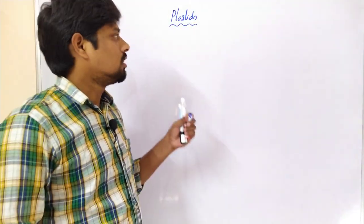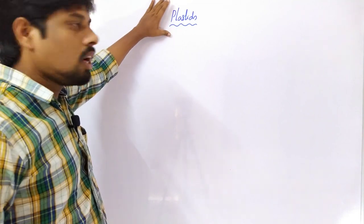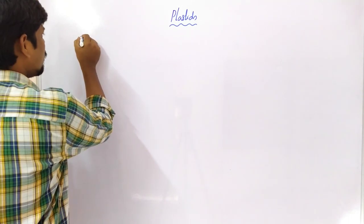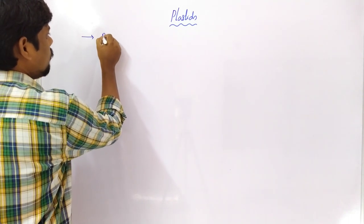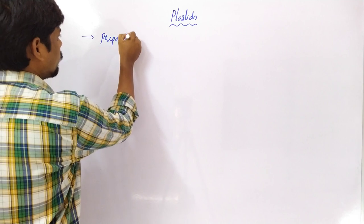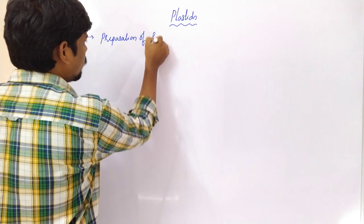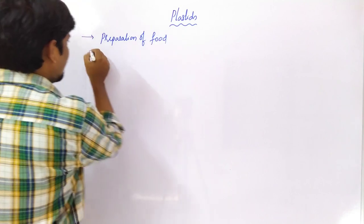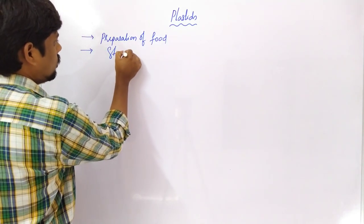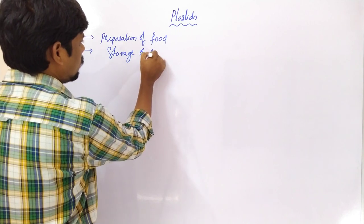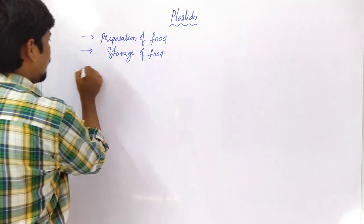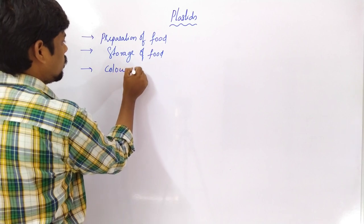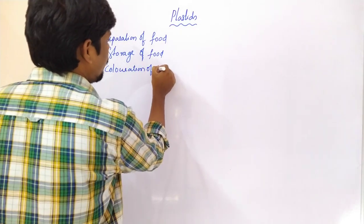Plastids are very important components of plants and some other photosynthetically active organisms. Basically, these Plastids are more abundantly present in plants. They are very essential for the preparation of food, the storage of food, and the coloration of plant products.